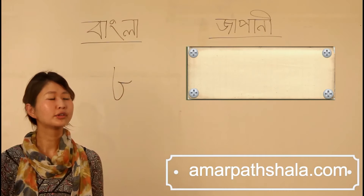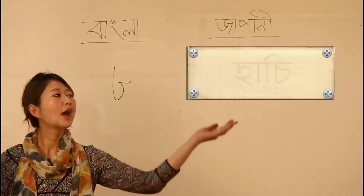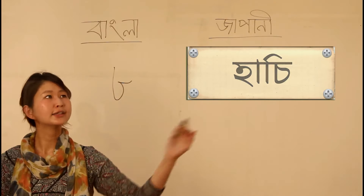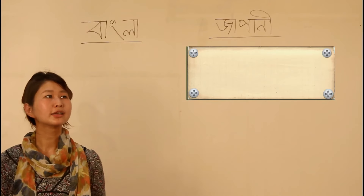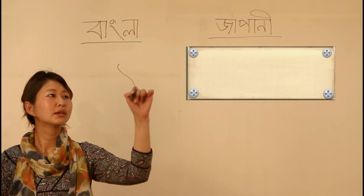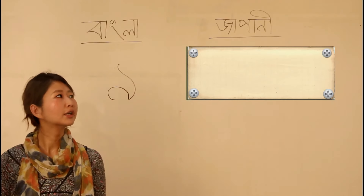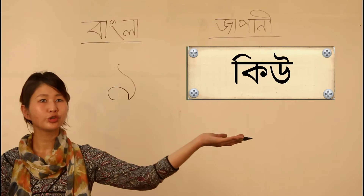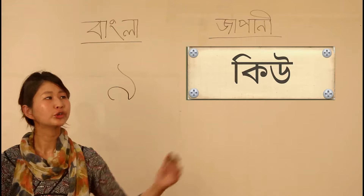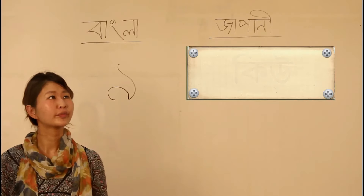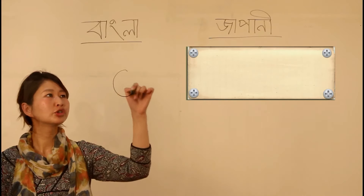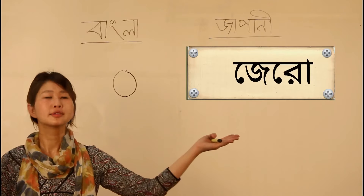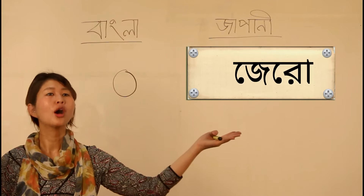In Bangla, 8 is aath. In Japanese, 8 is hachi. Bangla 9 is noy. Japanese 9 is kyuu. Bangla 10 is shunno. Japanese 0 is zero.